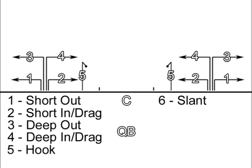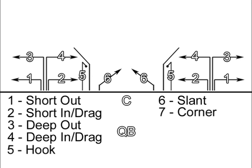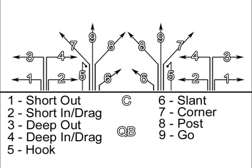Six is a slant, seven is a corner route, eight is a post, and nine is the go, fly, or streak route.